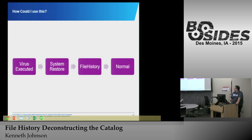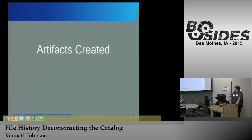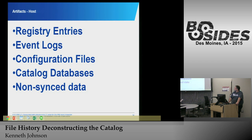So the recovery flow is: virus executed, system restored, go back to the file history, and we're back to normal. Artifacts created when you use file history include registry entries, event logs, configuration data, catalog databases, and non-sync data. The non-sync data will only be on the host, not on the backup location.